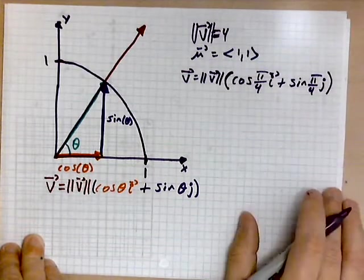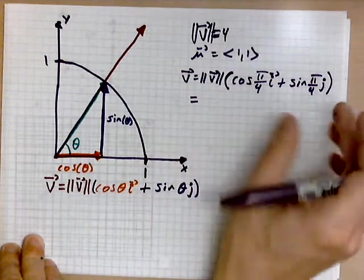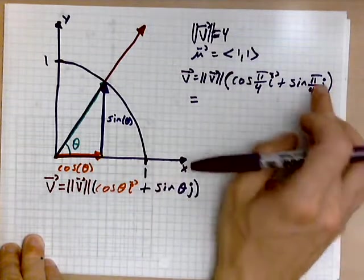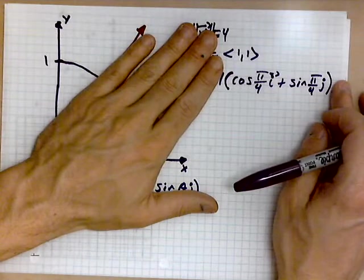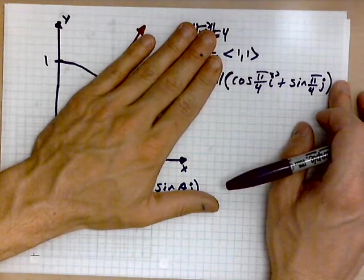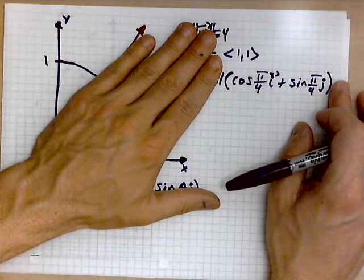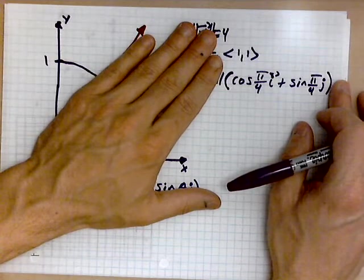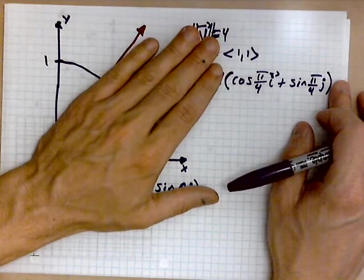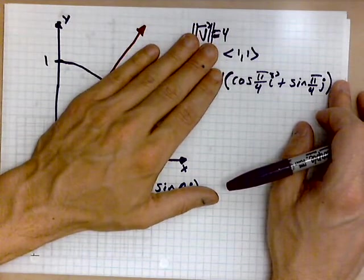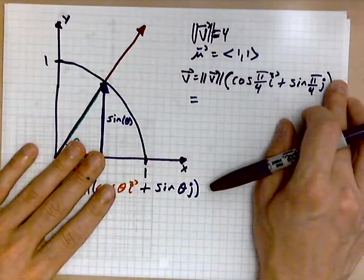So remember, cosine of pi over 4, sine of pi over 4. This is a unit vector. Its length is exactly 1. This is the only way to make this specific procedure work. If its length were different, then you would be distorting things.